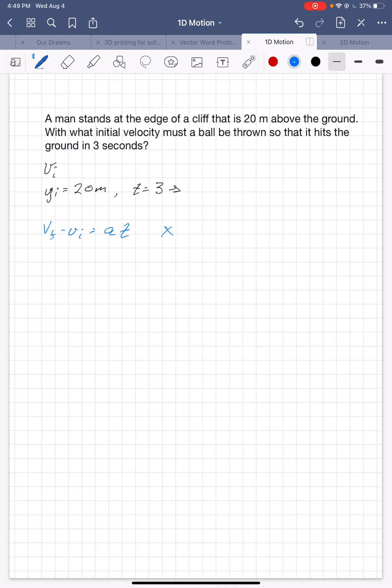The next one says V final squared equals V initial squared plus 2A delta Y. Well, I don't know V final or V initial again, so I'm not going to use that one.